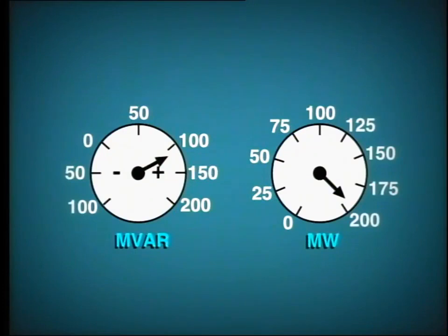The result of this is that we could easily overheat the generator windings if we had a high megawatt output plus a high megavar output. Definite limitations are placed upon the combined total output of megawatts and megavars.